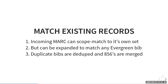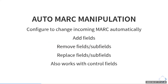It'll match existing records. Incoming mark can scope-match to its own set, so if it runs over and over again, it knows the records it was responsible for importing the first time. The second time it runs, it will match against its own set and do all the right stuff. It can be expanded to match any Evergreen bib if you want. Duplicate bibs are deduped, and the 856s are merged based on the subfield view.